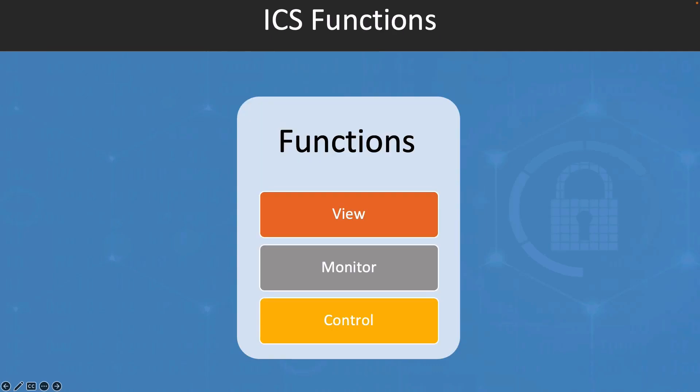So, what are the main industrial control system functions? We have three main functions. We have the view, the monitor, and control. The view function involves displaying the current state of the industrial process to the operator. It provides an overview of the process by showing relevant data such as temperature, pressure, flow rate, and other variables. The operator can use this information to monitor the process and identify any issues or anomalies that require attention.